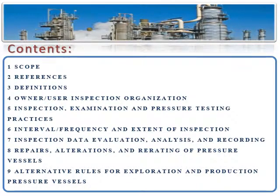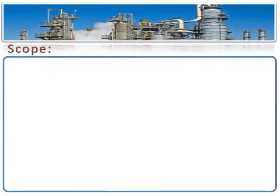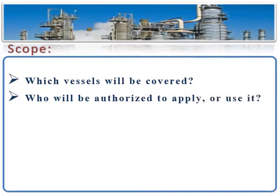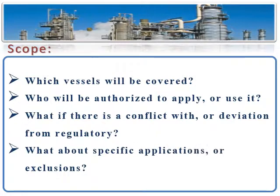And finally, Alternative Rules for Exploration and Production. When we talk about scope, it simply means: which vessels will be covered, who will be authorized to apply or use it, what if there is a conflict with or deviation from regulatory requirements, and what about specific applications or exclusions?